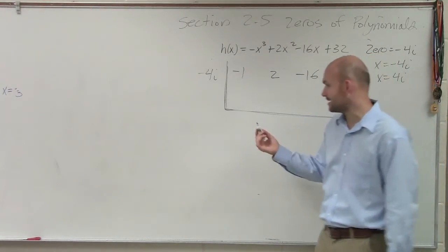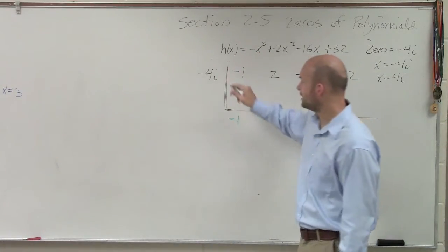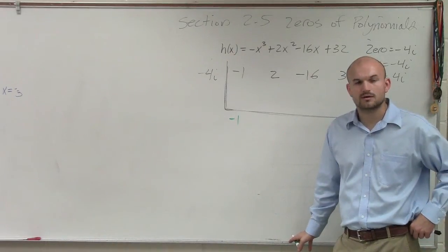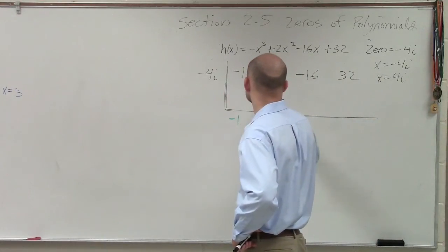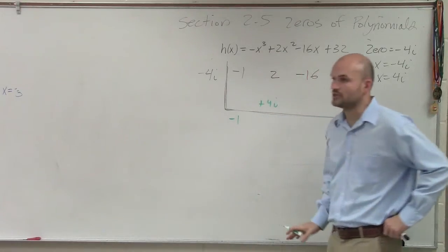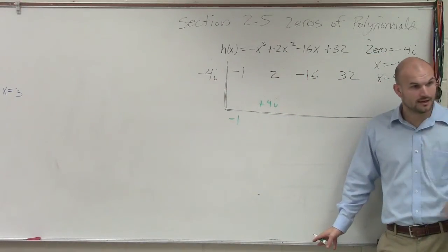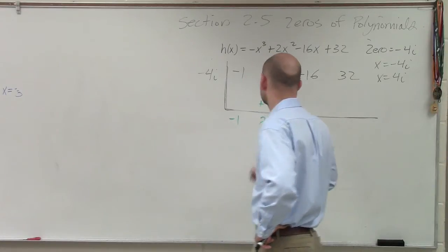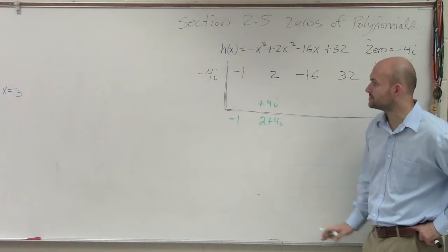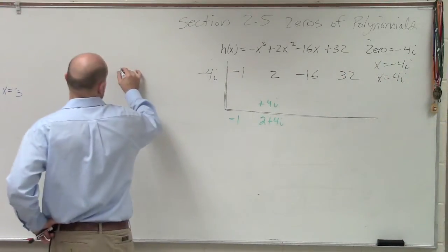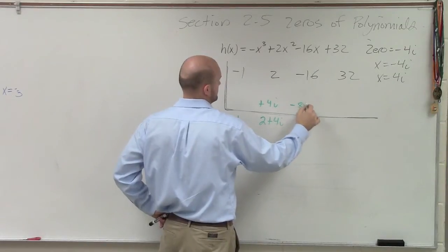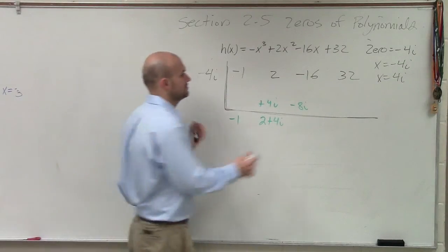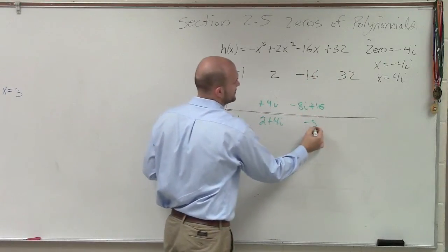The first thing we do is we bring down the negative one. Now, negative one times negative 4i is going to be a positive 4i. Two plus 4i is going to be two plus 4i. Now we need to multiply two plus 4i times negative 4i. Those cancel out and you're just left with negative 8i.